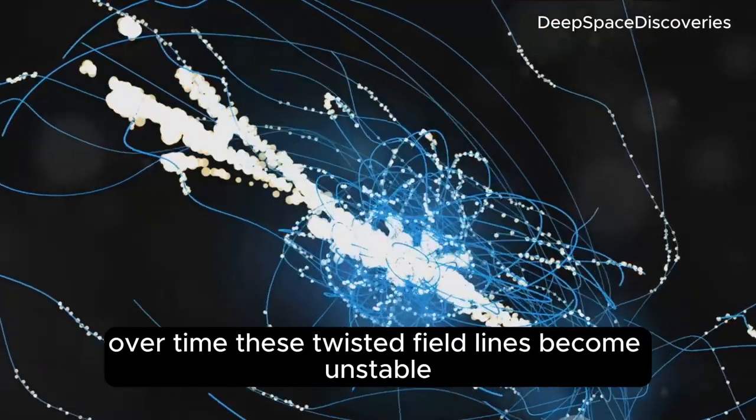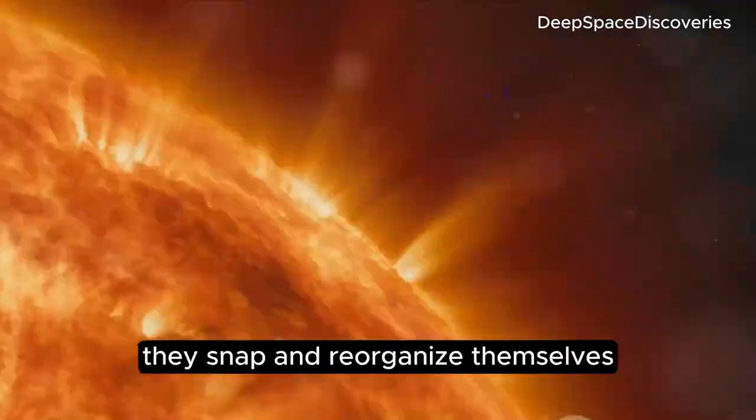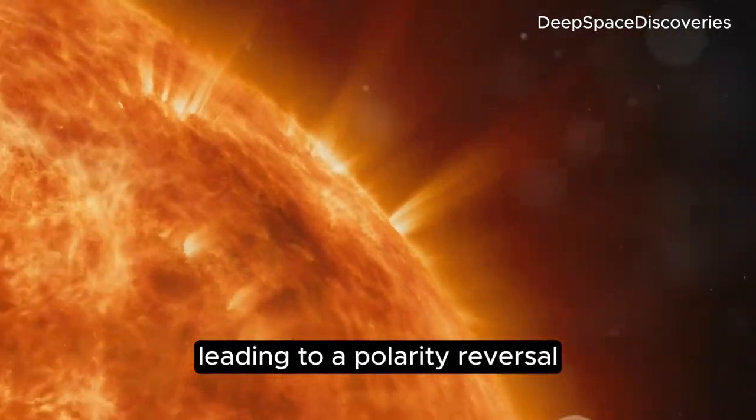Over time, these twisted field lines become unstable, and like a rubber band stretched too far, they snap and reorganize themselves, leading to a polarity reversal.